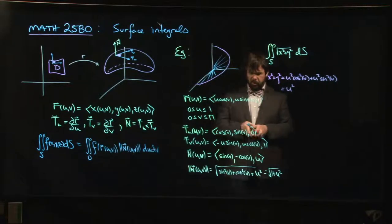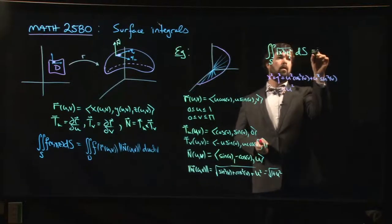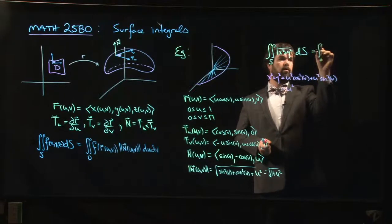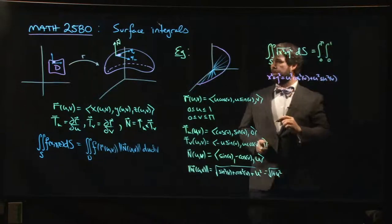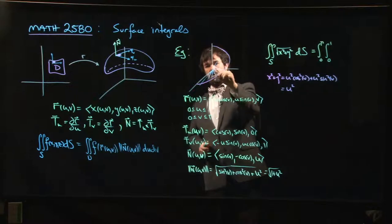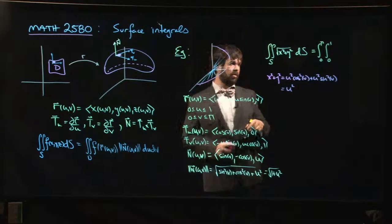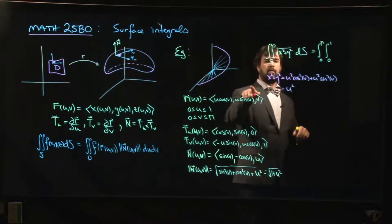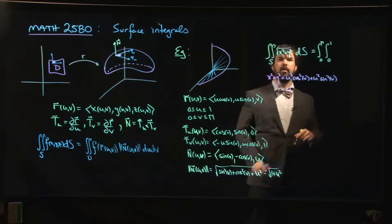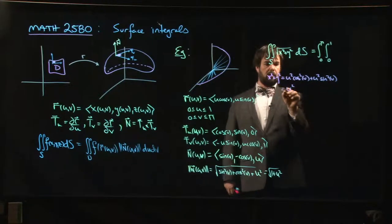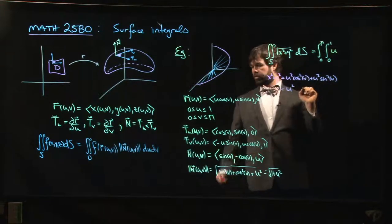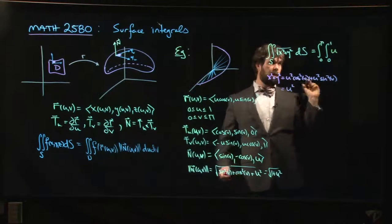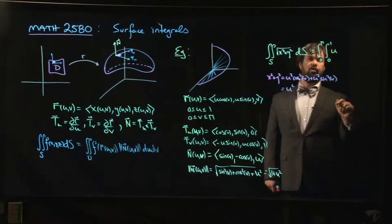So when we parametrize, we have v going from 0 to pi, u going from 0 to 1. The u parameter just decides how wide the ramp is going to be. So my function is going to be square root of x squared plus y squared, which is the square root of u squared. That's the absolute value of u, but u is positive, so square root of u squared is just u.